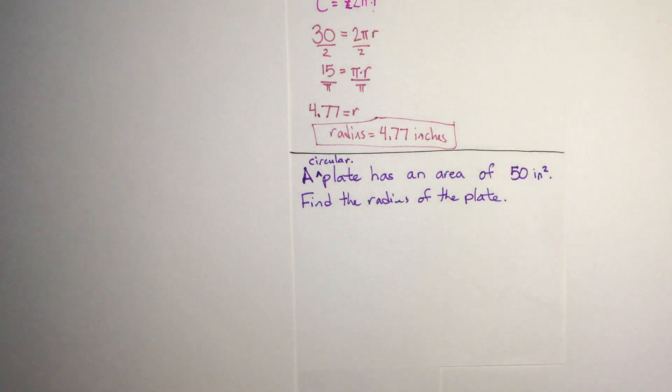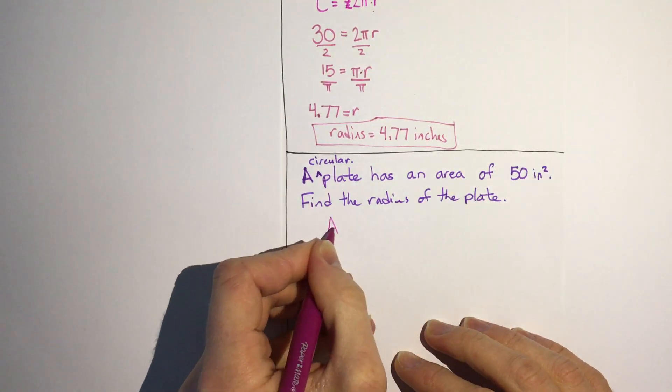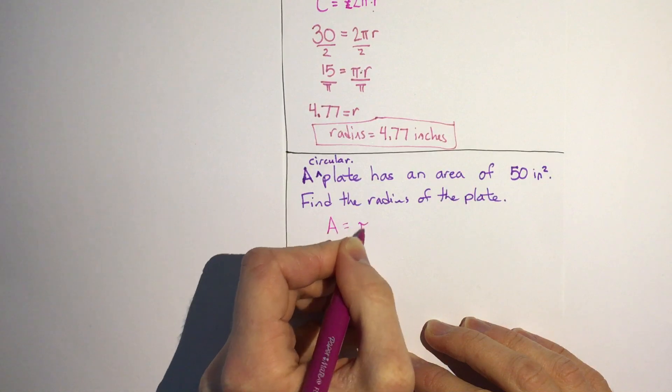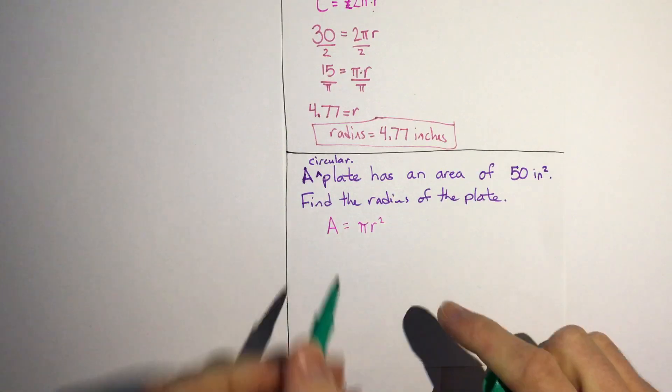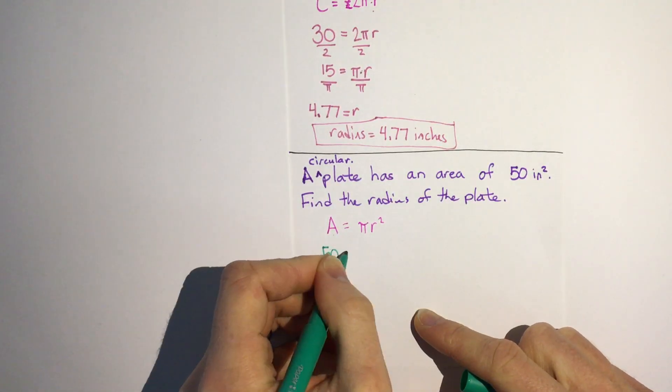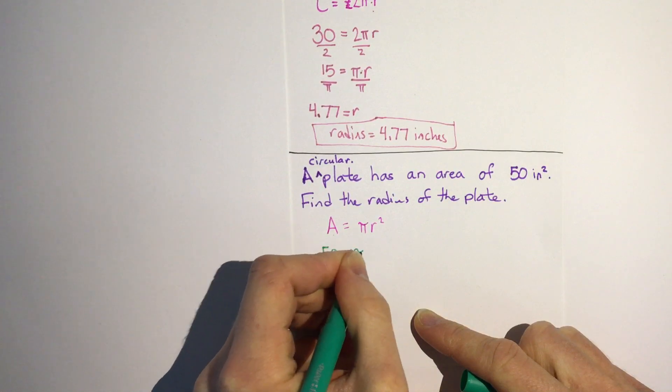The second one is a very similar problem. It says a circular plate has an area of 50 square inches, find the radius of the plate. Here the only difference is we're given area, so now we're using the formula A = πr². Just like before though, we're going to put in place of area 50, so 50 equals πr².